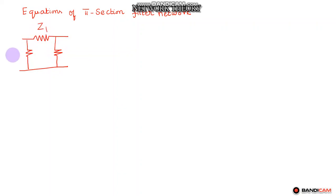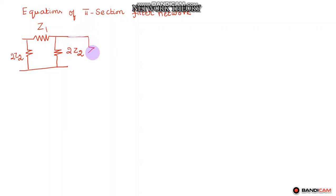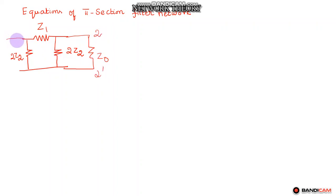The series arm accounts to z1. The two shunt arms are in parallel, so you can write this as 2z2 into 2z2 by 4z2, which will become z2. Here you also attach a load resistance equal to the characteristic impedance at terminals 2, 2-dash, and an input terminal 1, 1-dash.